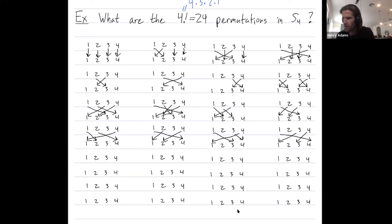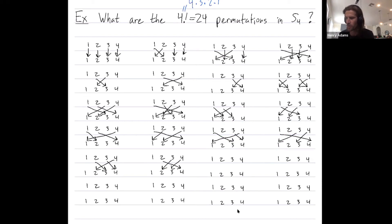I also have 3-cycles on {2, 3, 4}. I could do 2 to 3, 3 to 4, 4 back to 2. Or in the opposite order: 2 to 4, 4 to 3, 3 back to 2.